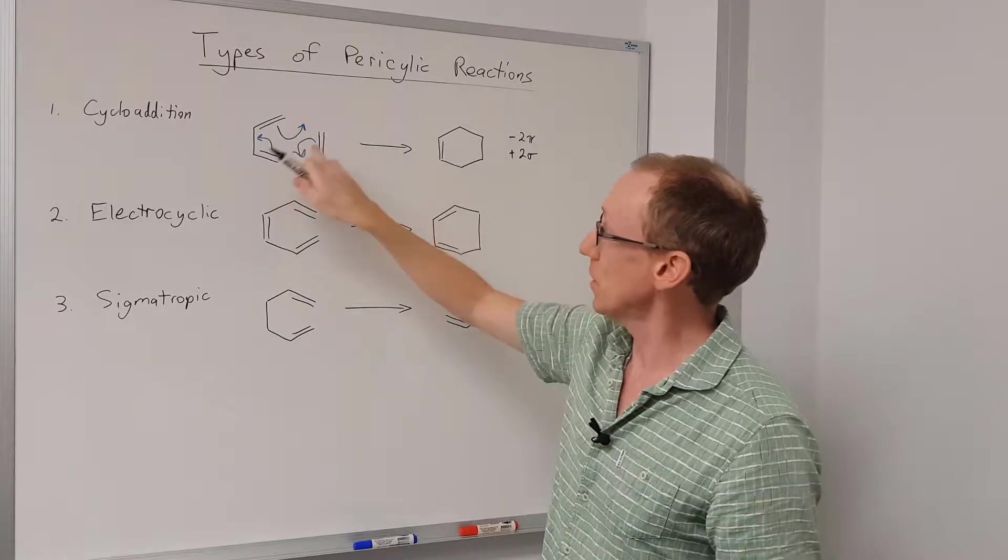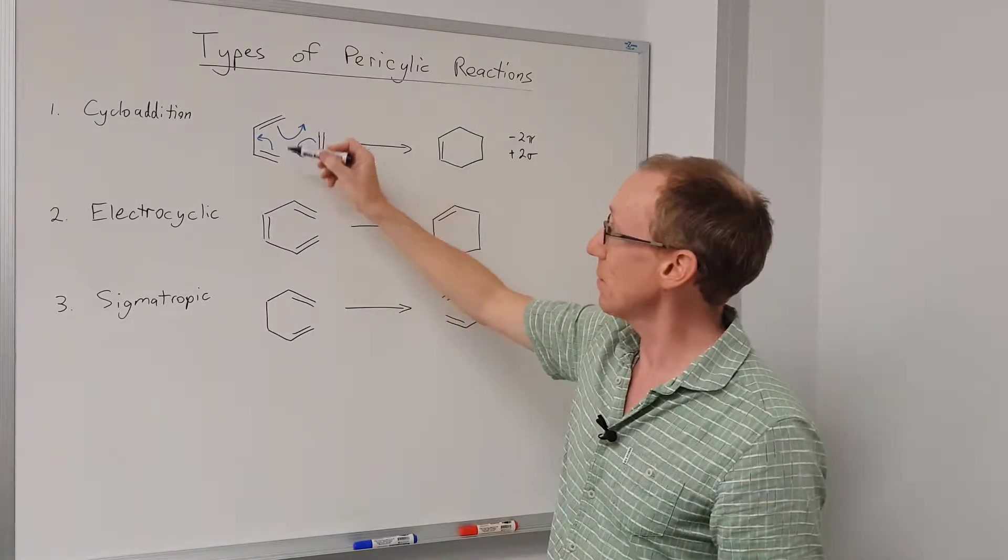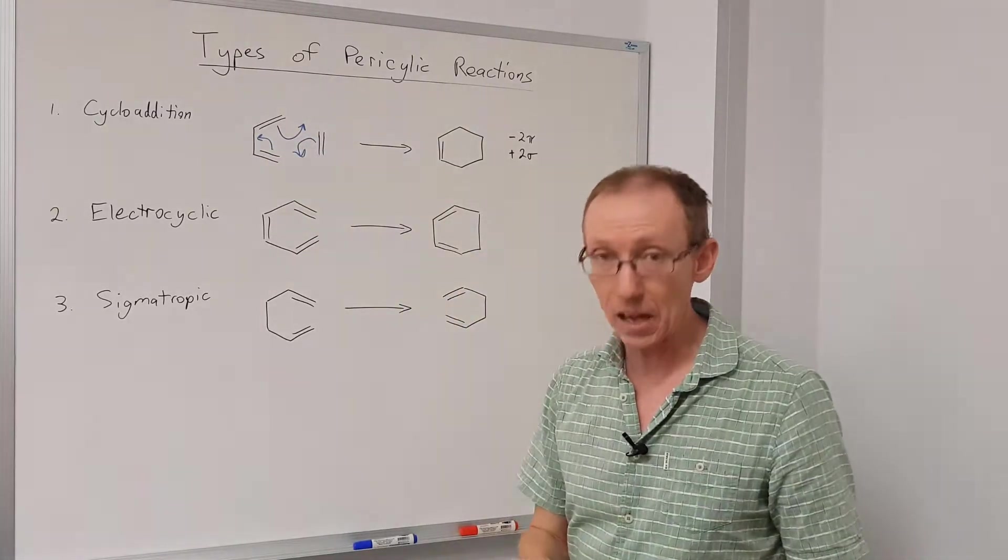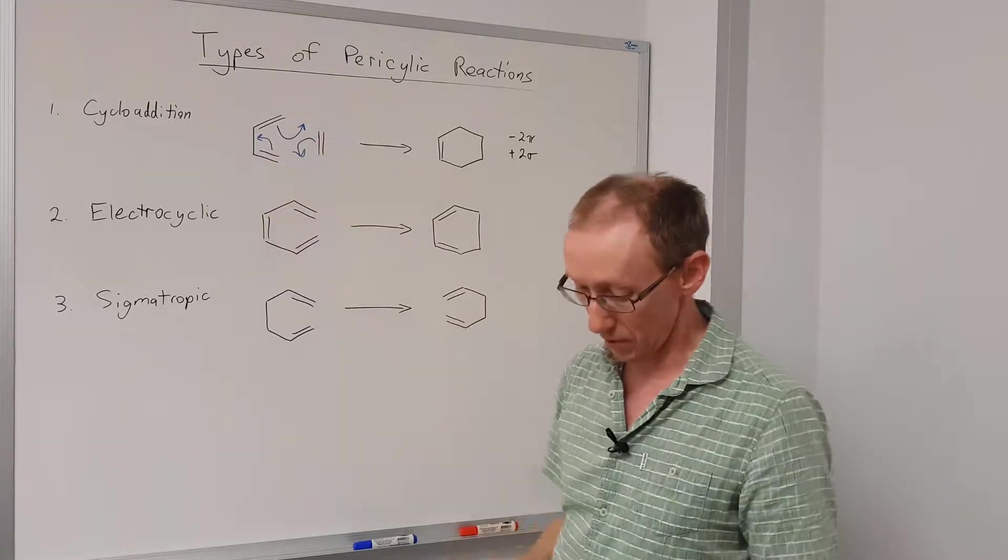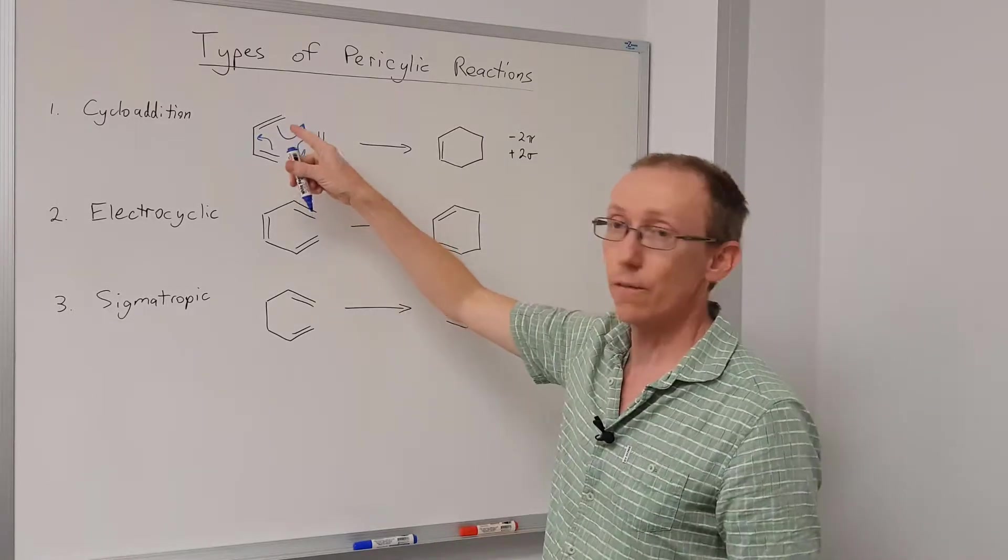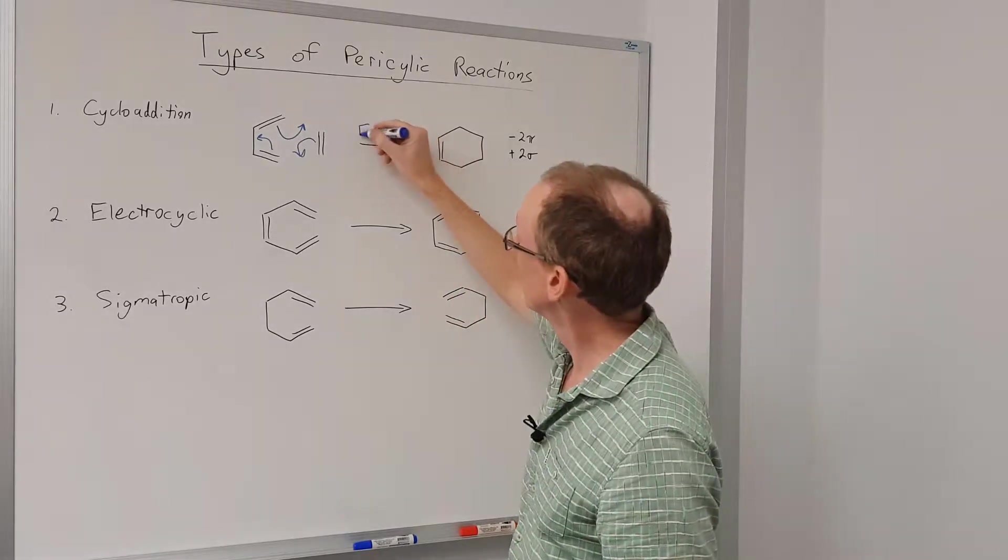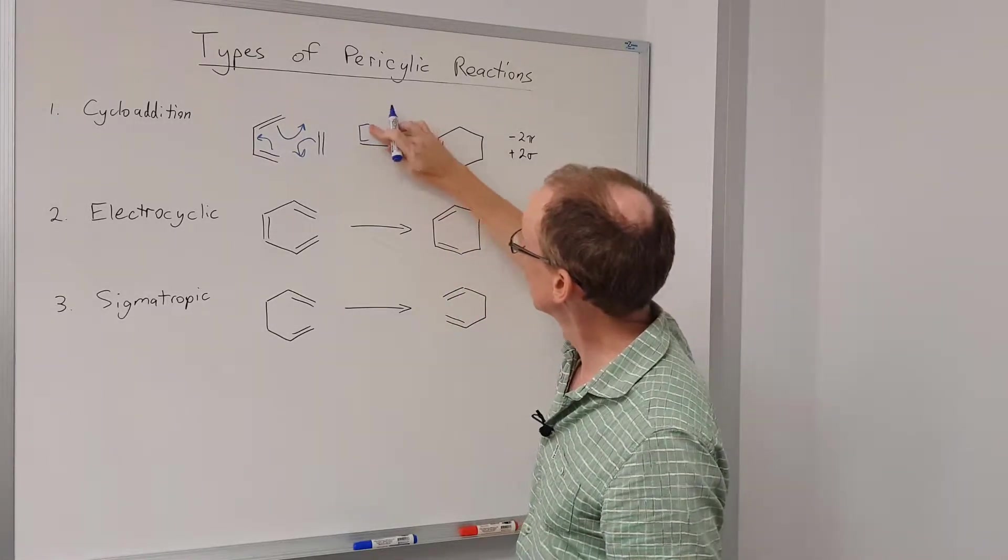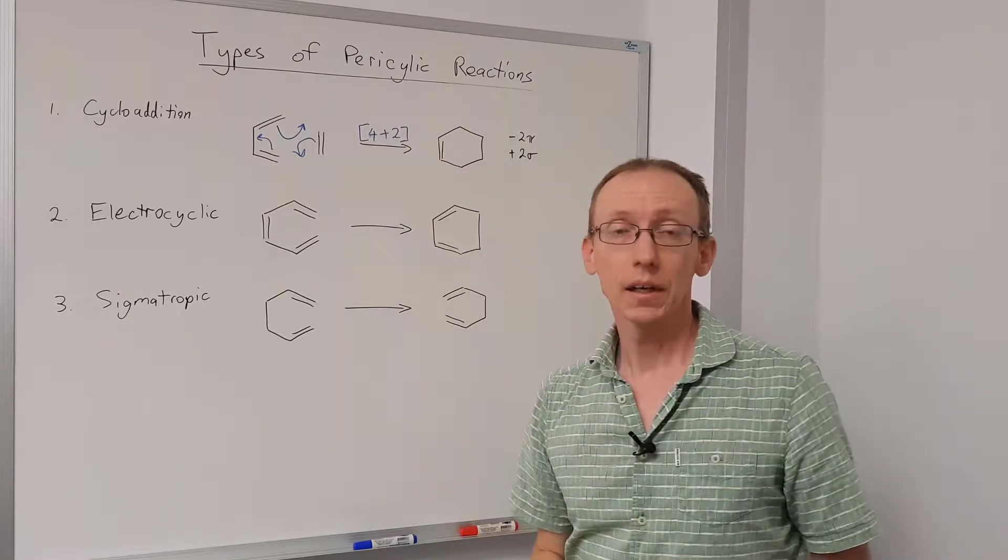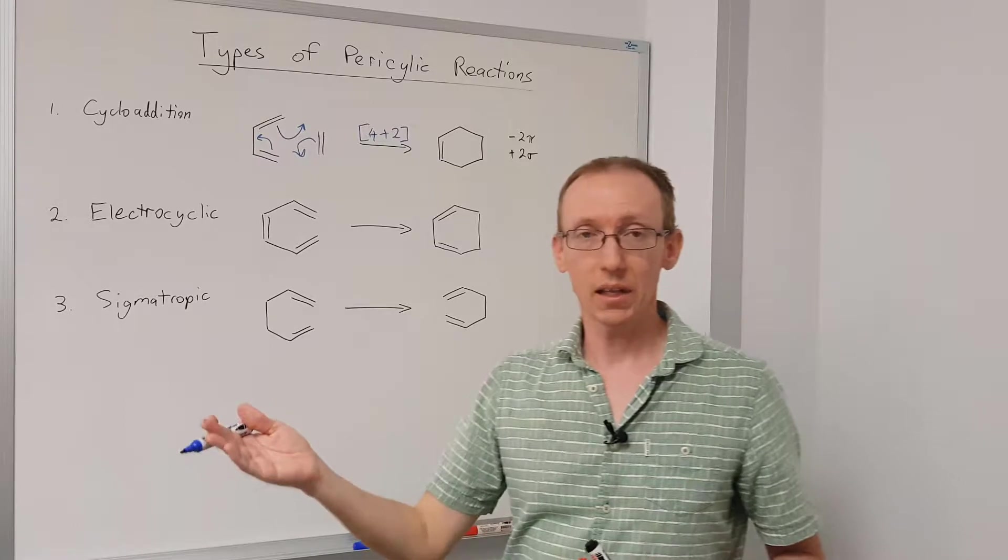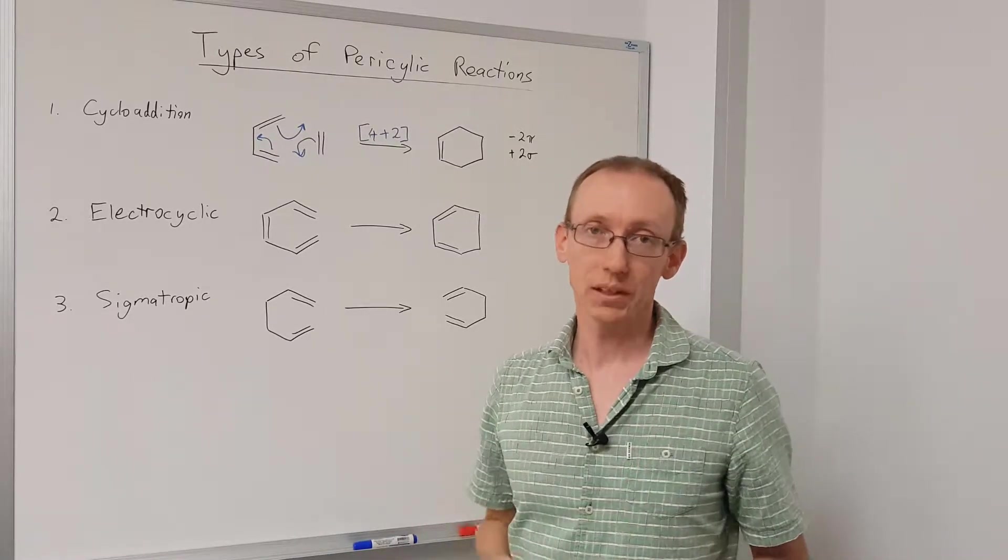Okay, now this Diels-Alder reaction, or this particular variant of a cycloaddition, we can name that according to a naming convention that looks at the number of pi electrons in each of the components. So we have two pi electrons and two pi electrons coming together to make a four-membered ring, then we call that a 2 plus 2 cycloaddition.